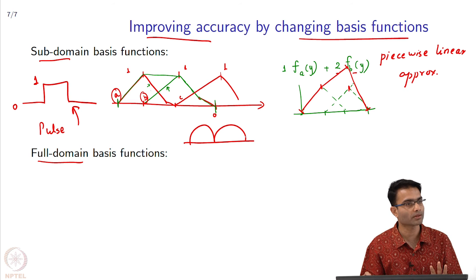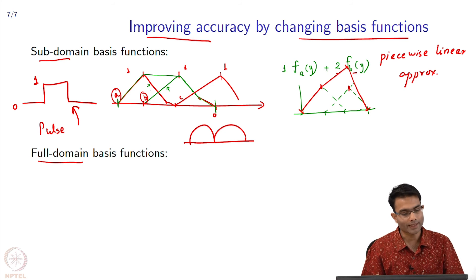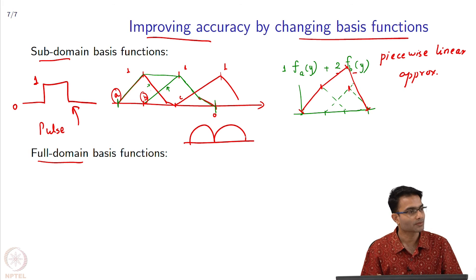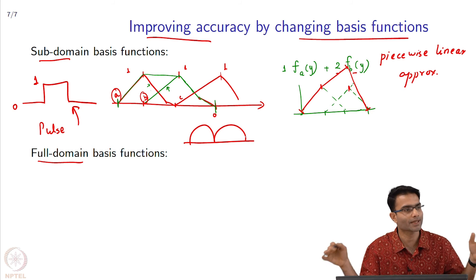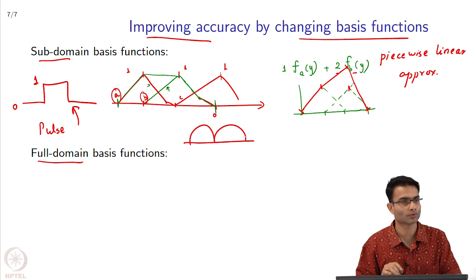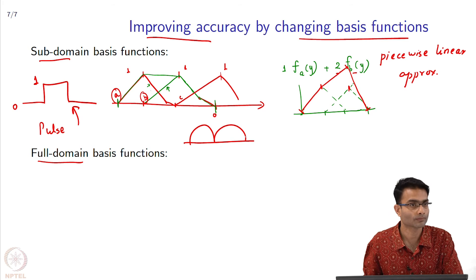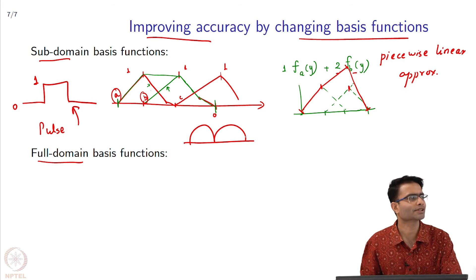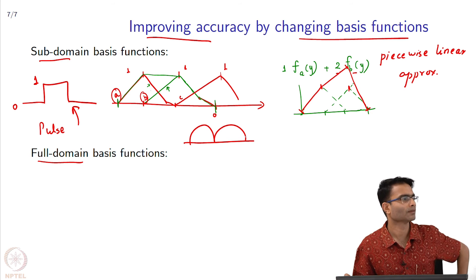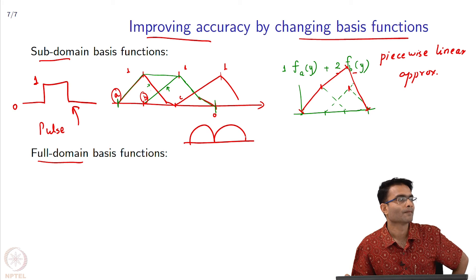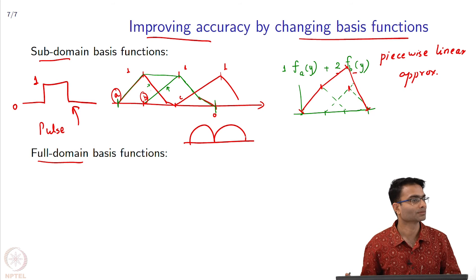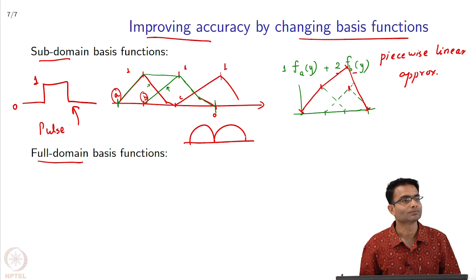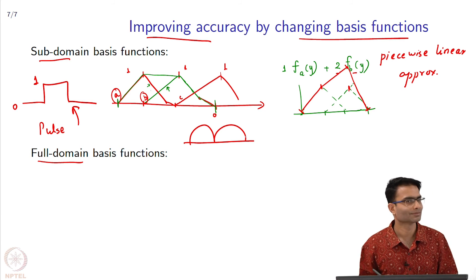Finally, there are full-domain basis functions which, as the name suggests, they are non-zero all through the line. Any guesses for one very popular full-domain? Cos or cosh you all studied in first year of engineering. Full domain means it is non-zero everywhere in the domain.